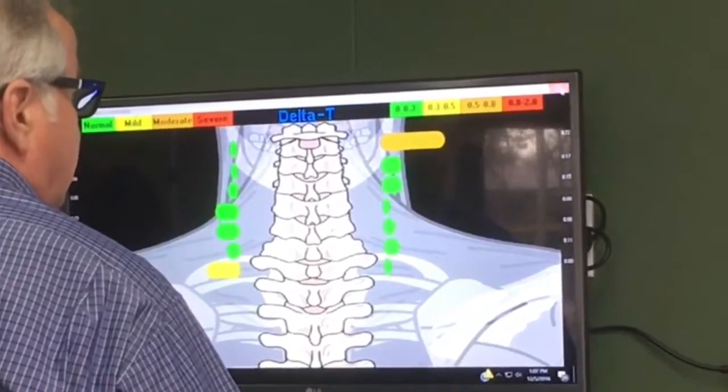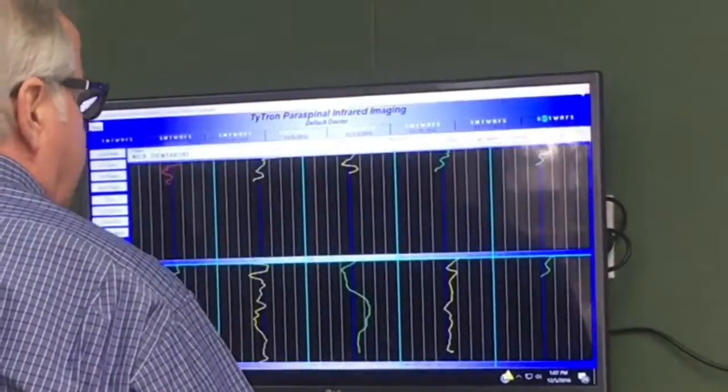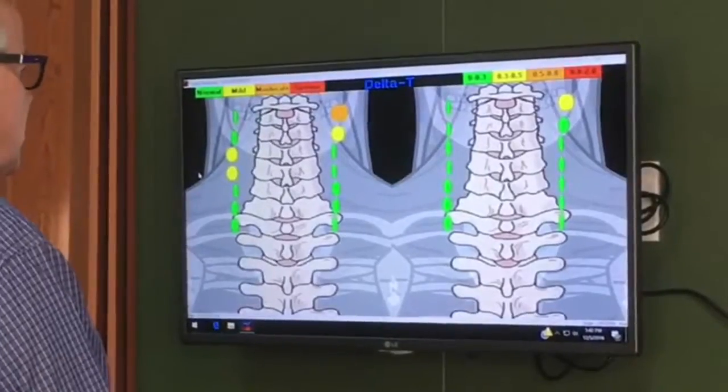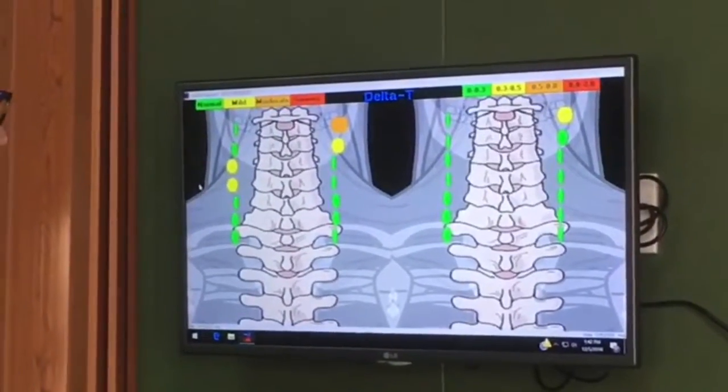And then we compare that to the old one, the pattern, to see what has changed and what's the same. So there's still one that's yellow, it was orange before so I'm going to recheck it.